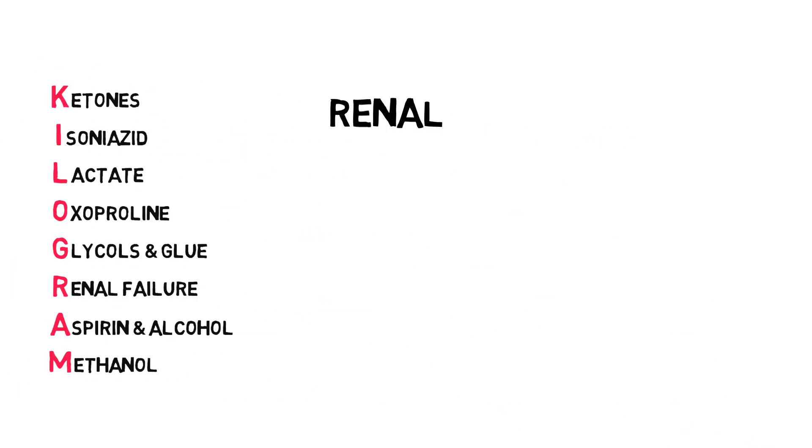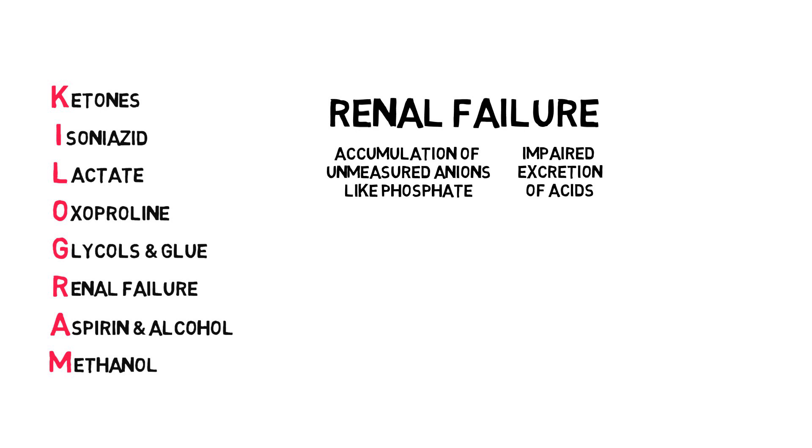Renal failure. Yes, renal failure can give both a normal anion gap metabolic acidosis, as well as a high anion gap metabolic acidosis. The cause for the latter is mostly due to the accumulation of unmeasured anions like phosphate and urate, and the impaired excretion of acids.